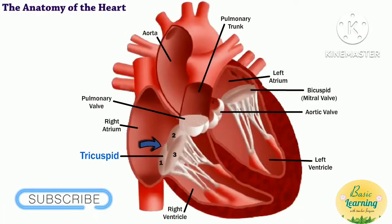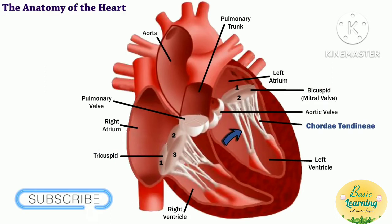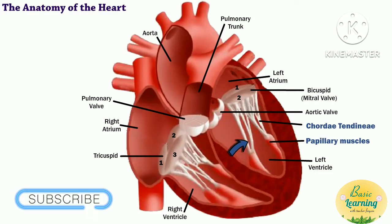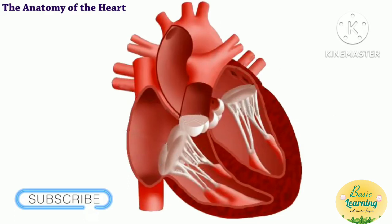The tricuspid has three flexible cusps or flaps, and the bicuspid has two. Chordae tendineae are attached to the papillary muscles, which are located in the ventricles. When these muscles contract, the string-like chordae tendineae become taut. It is the chordae tendineae together with the papillary muscles that keep the valve shut when the ventricle contracts.